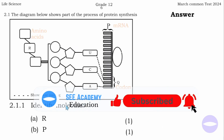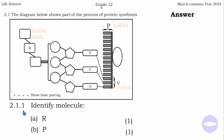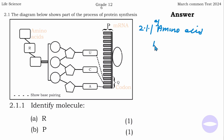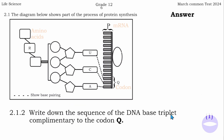Question 2.1.1 says: identify molecule R. Molecule R is amino acid. And then identify molecule P. Molecule P is mRNA. Those are the molecules identified.